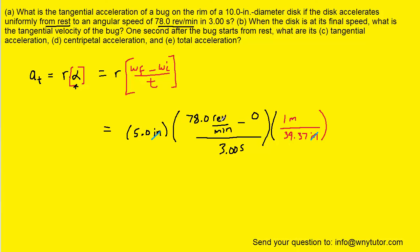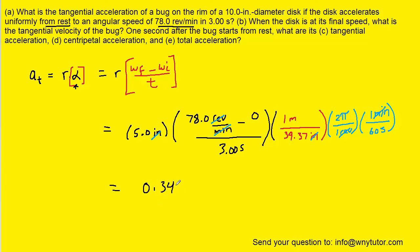We also have to convert revolutions per minute into radians per second. In one revolution there are 2π radians, so the revolutions in the numerator cancel with the revolutions in the denominator. And since one minute is equivalent to 60 seconds, the minutes in the denominator cancel with the minutes in the numerator. We can now pick up our calculators and process this rather lengthy calculation, and we end up with approximately 0.346. The unit works out to meters per second squared — there are two seconds in the denominator, giving us seconds squared.